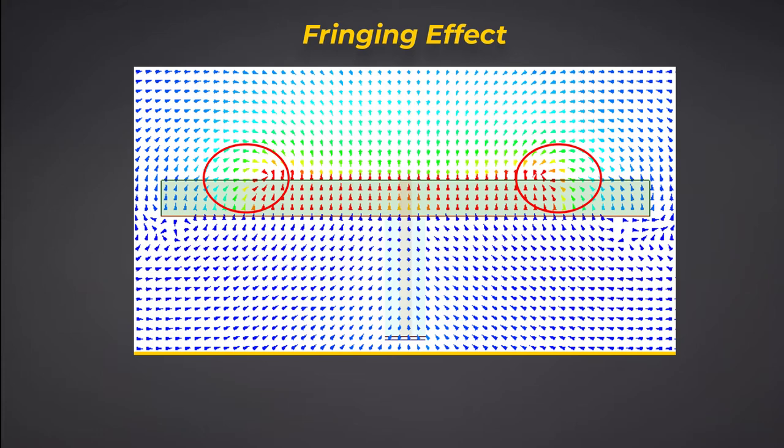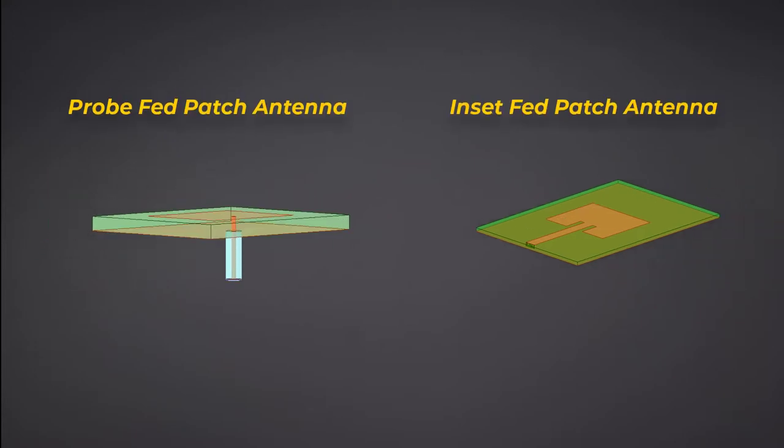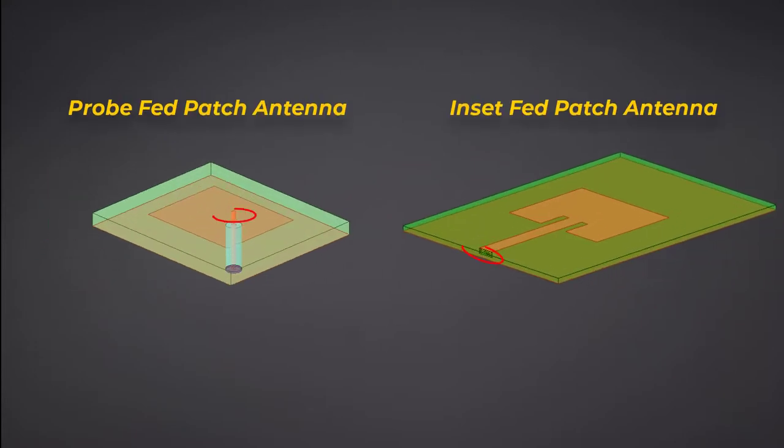This fringing effect which is due to the path of that electric field. Those lines make those antennas look larger or wider than it physically is. And the main cause of fringing can be due to the width and the position of the feed point to that antenna.